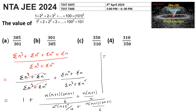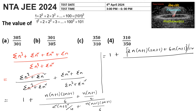Simplifying with LCM of 6 and 2 being 6, and denominator LCM of 6 and 4 being 12: multiply to get 2·n·(n+1)·(2n+1) + 6·n·(n+1) divided by 12, and the denominator becomes 3·n²·(n+1)² + 2·n·(n+1)·(2n+1), then we can remove the 12.